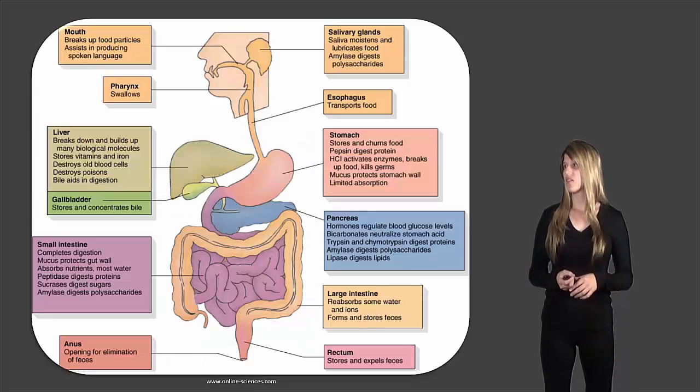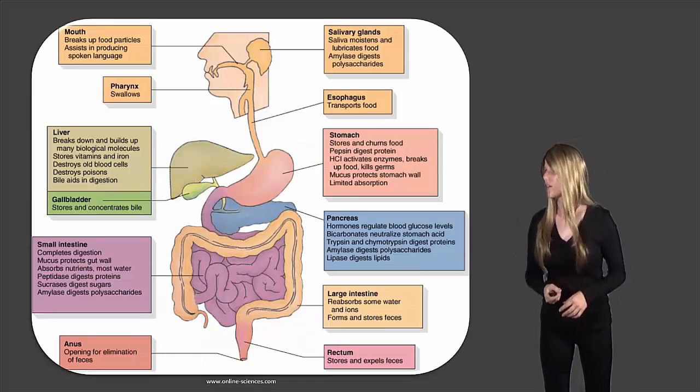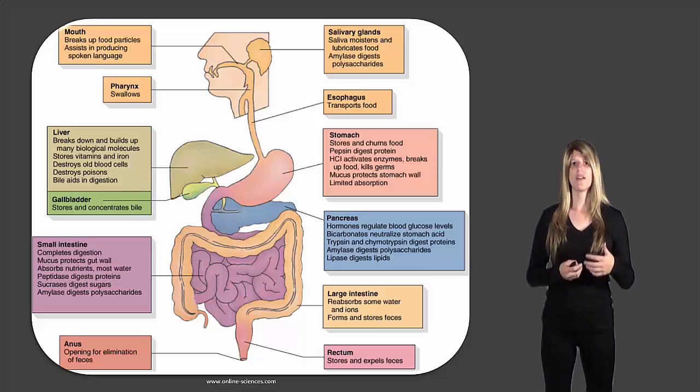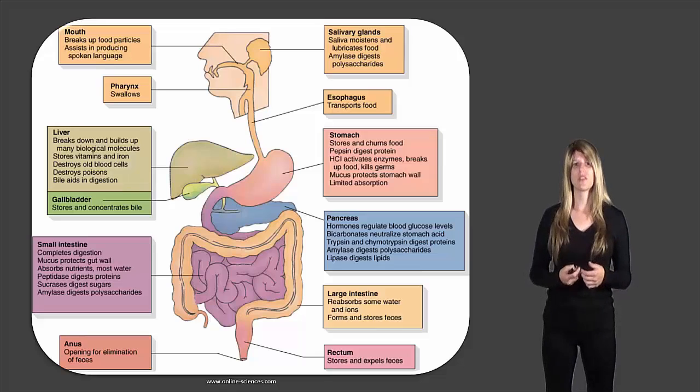After that, it moves into the small intestine, so that's in purple there. So in the small intestines, your body starts absorbing the nutrients from the food. It also absorbs some of the water and the nutrients. So this is important for us to actually get the nutritious value out of the food that we're eating, because so far in the digestive system all we've done is break down the food but we need to start absorbing those nutrients.